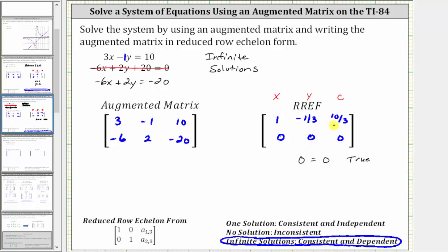Before we do this, notice how the equivalent equation to row 1 is 1x or x minus one-third y equals 10-thirds. So notice how if we were to solve this for x, we would add one-third y to both sides, and x is equal to 10-thirds plus one-third y.